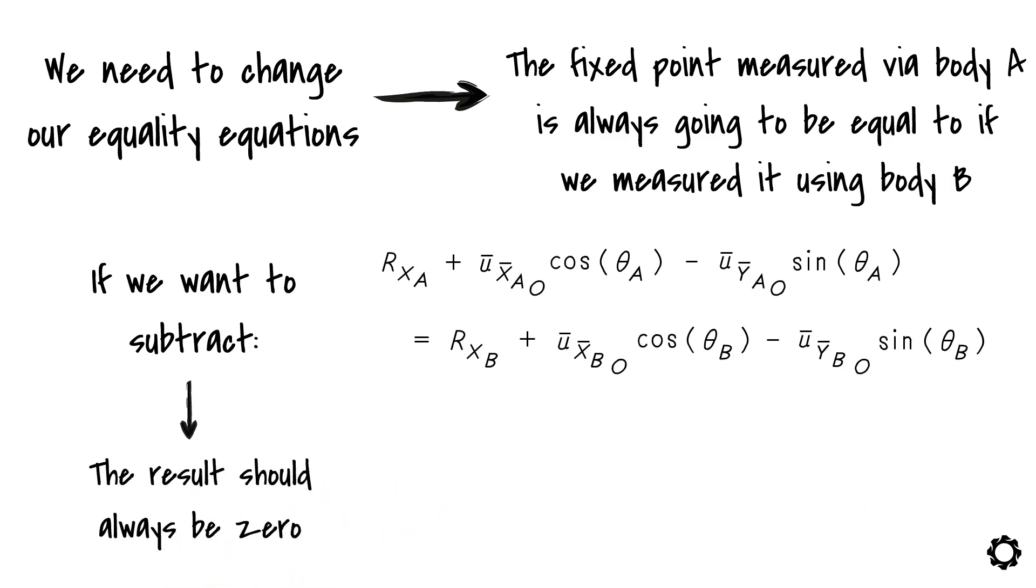Mathematically, this is written as C1 is RxA plus U bar X bar AO cos theta A minus U bar Y bar AO sin theta A minus RxB minus U bar X bar BO cos theta B plus U bar Y bar BO sin theta B equals zero.